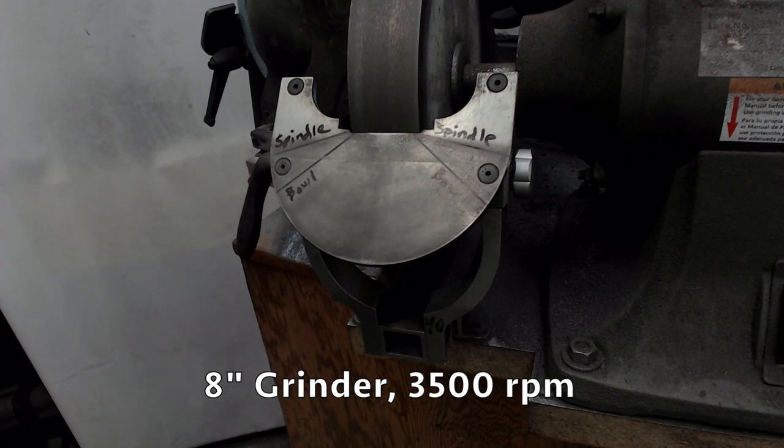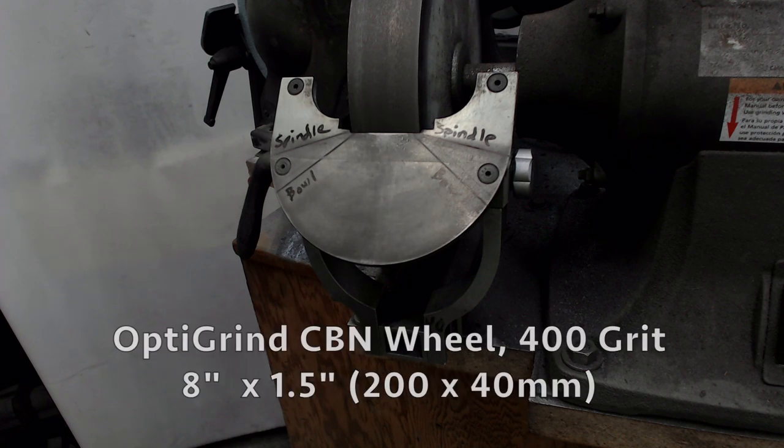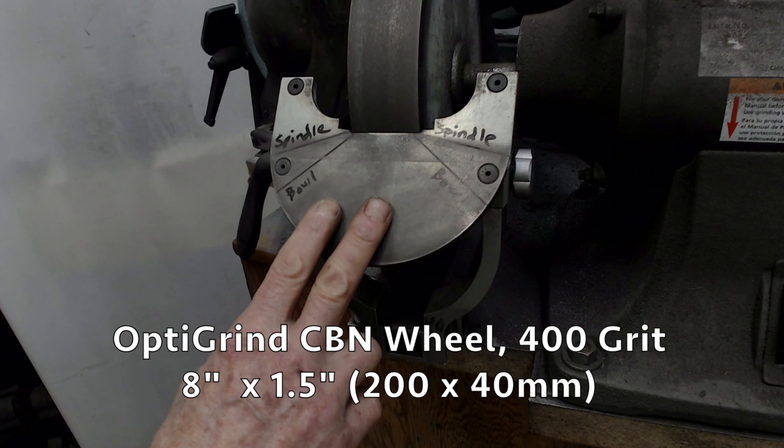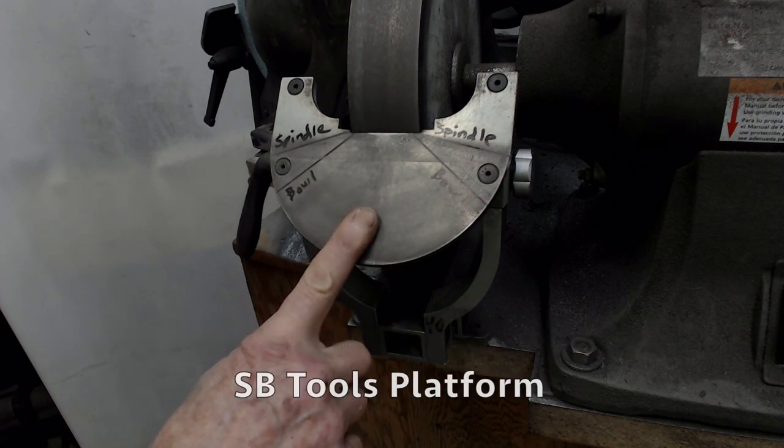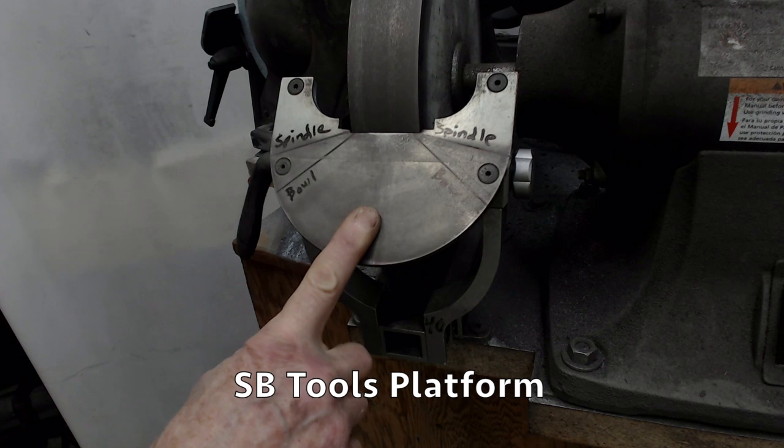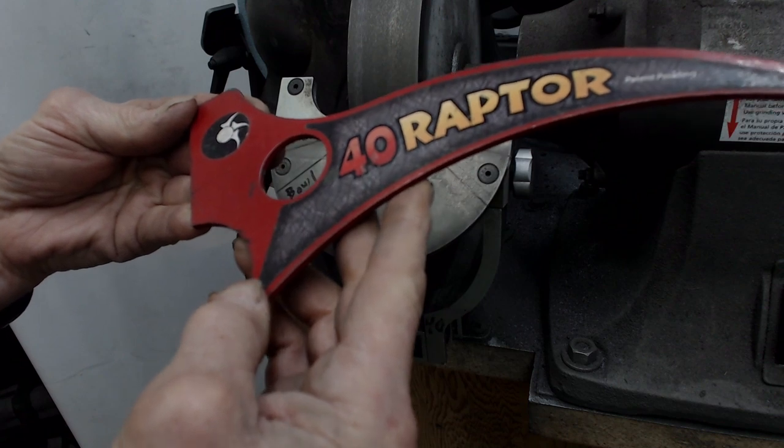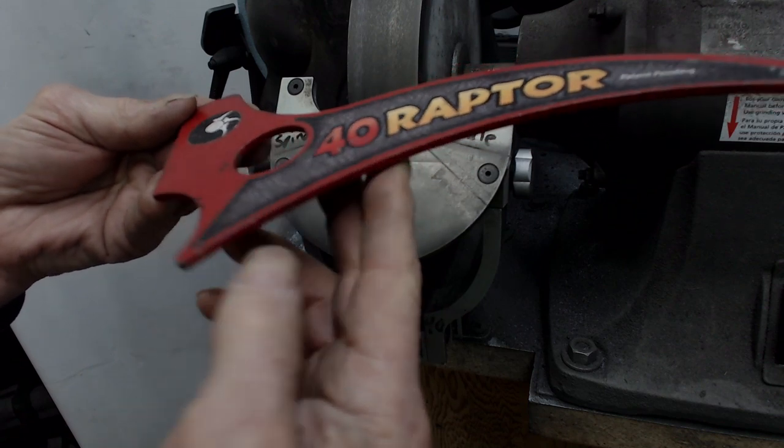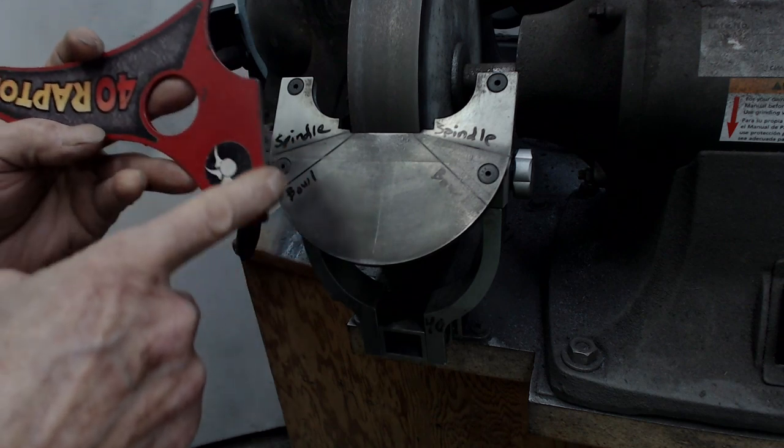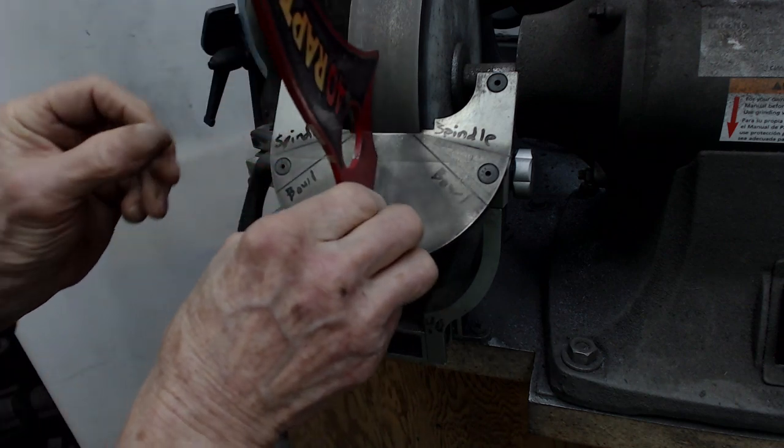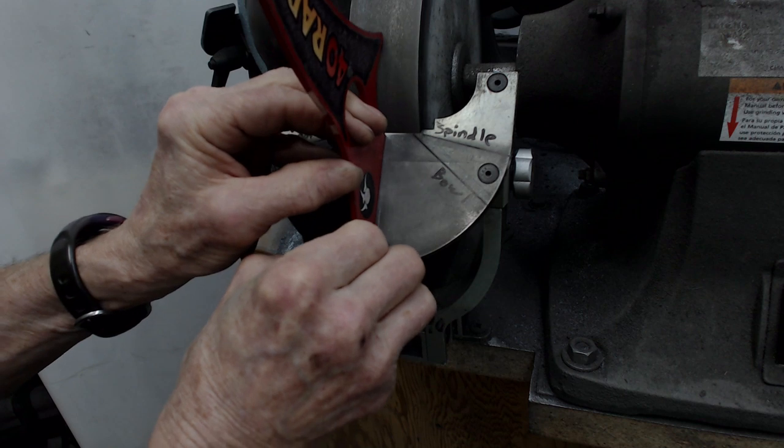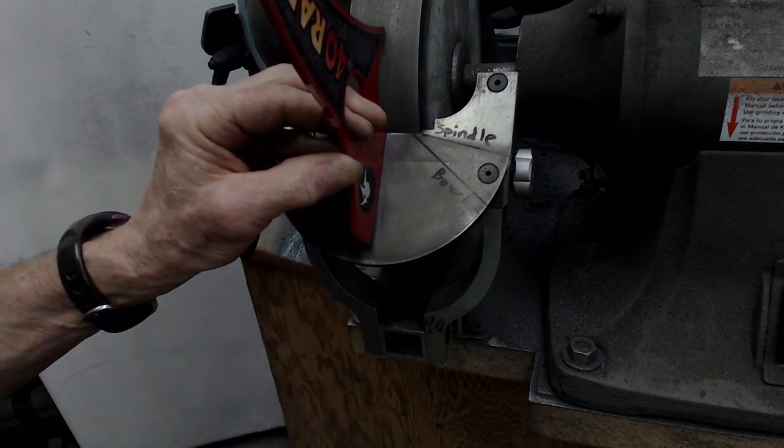I'm using an 8 inch grinder with 8 inch by 1.5 inch wide wheels. This is a 400 grit wheel. I have a Stuart Batty adjustable platform to set my angle for the gouges. I'm going to use the Raptor setup gauge to get my platform set to a 40 degree angle. The flat of the gauge goes against the platform and the nose touches the wheel and I have my angle.